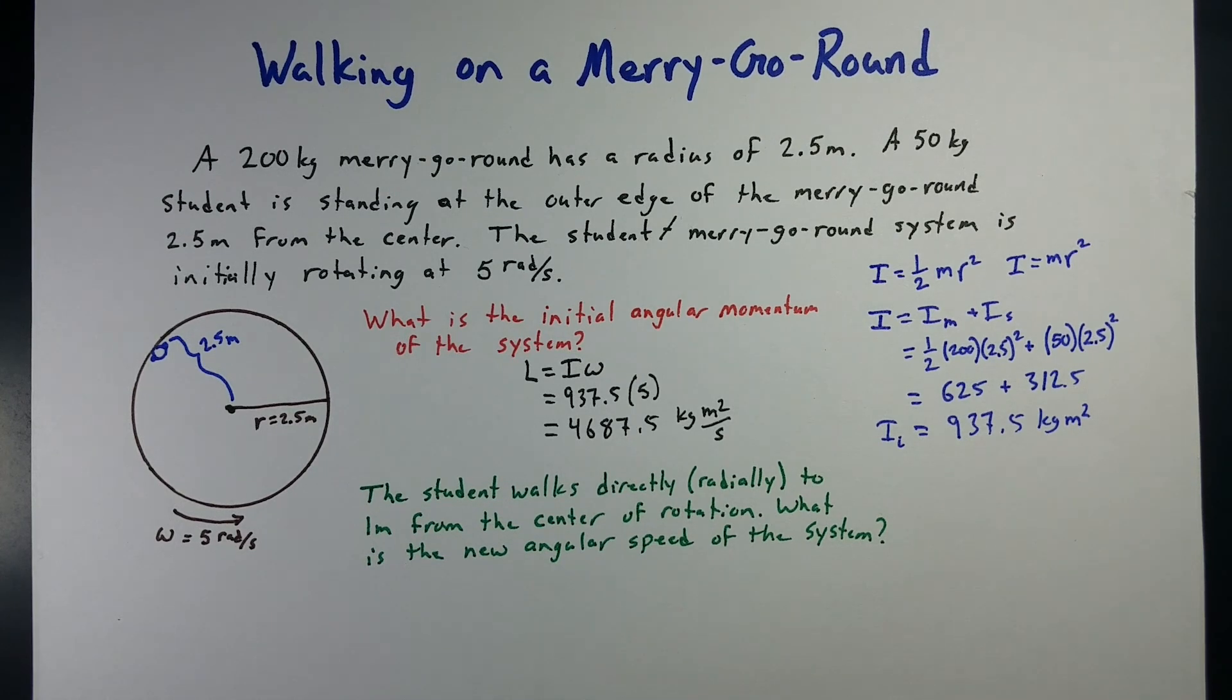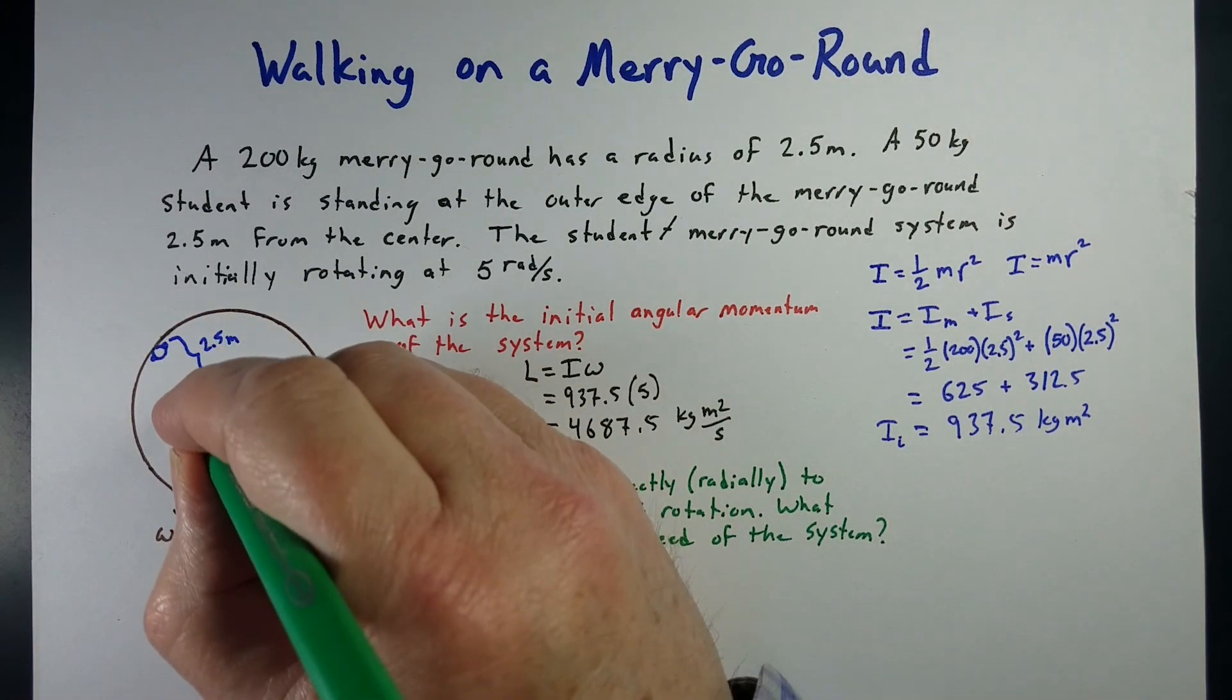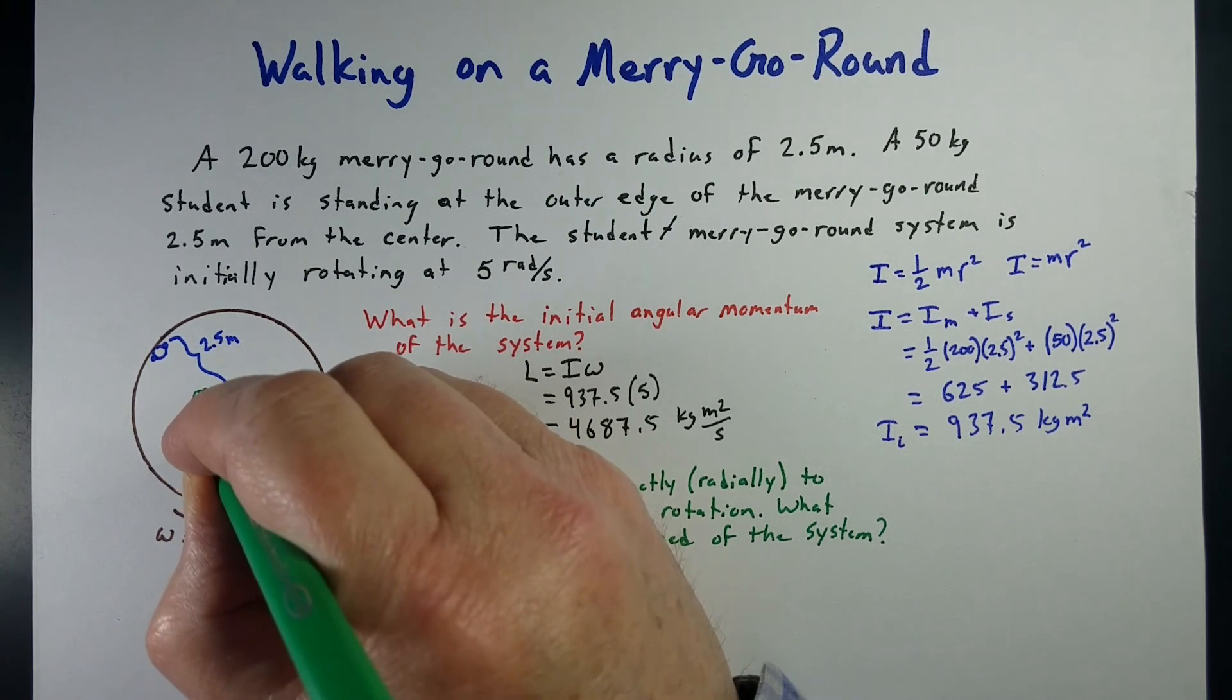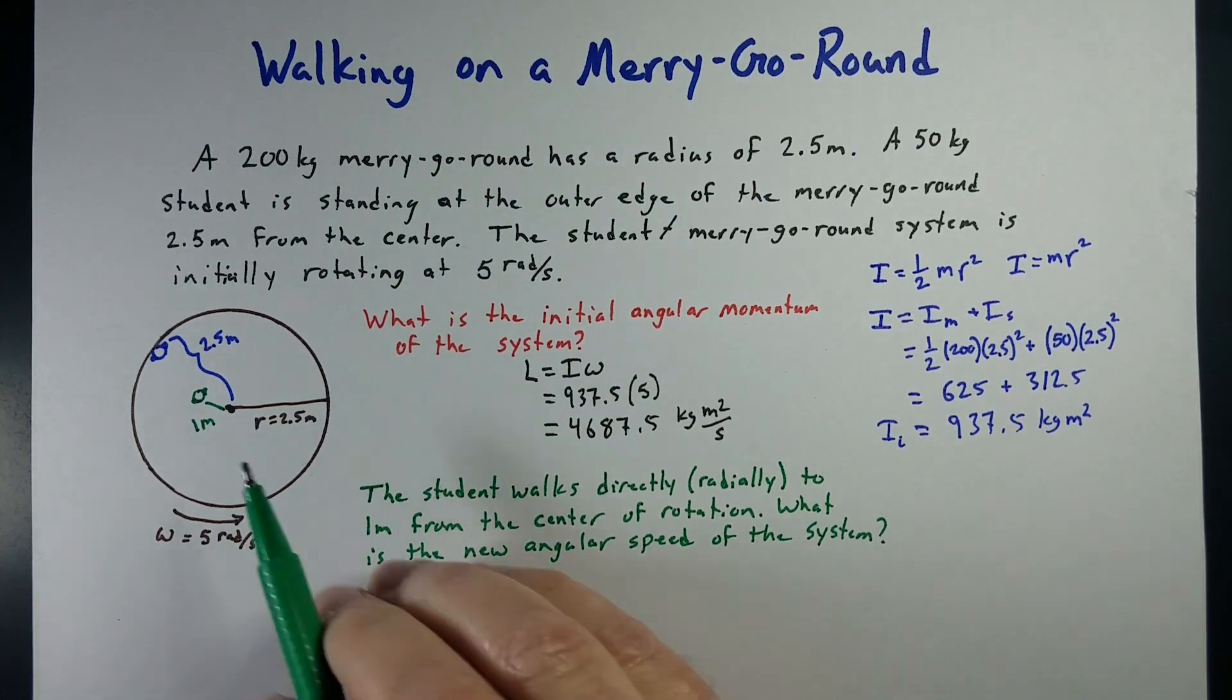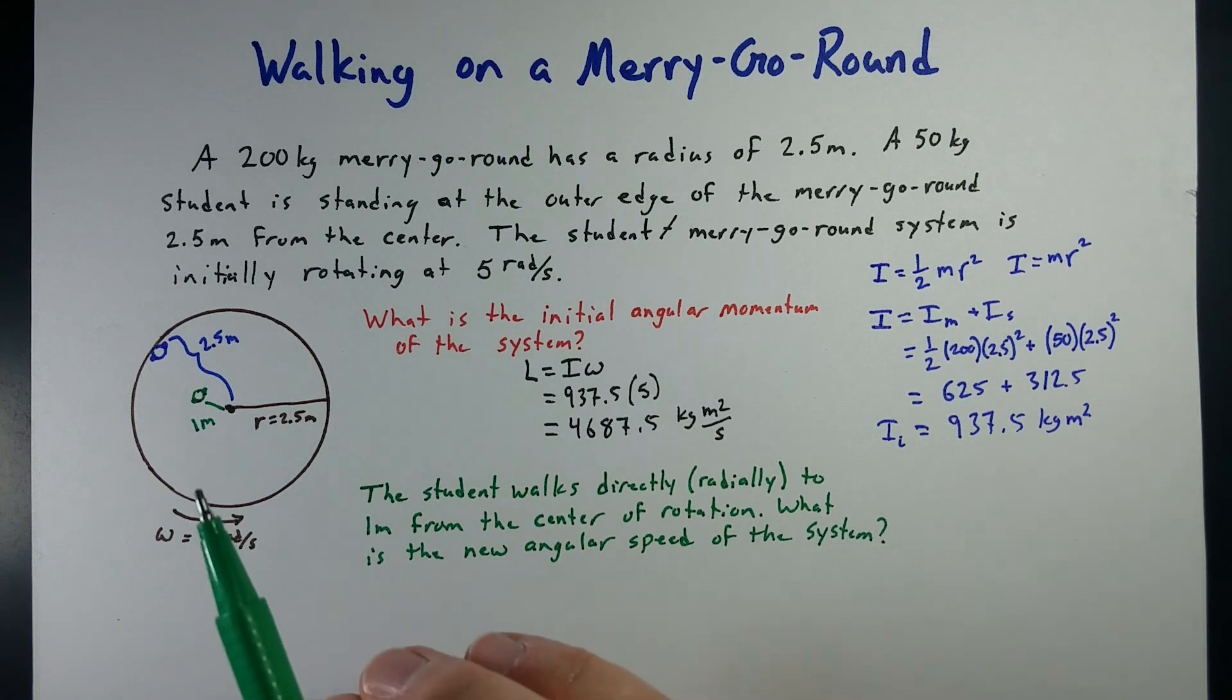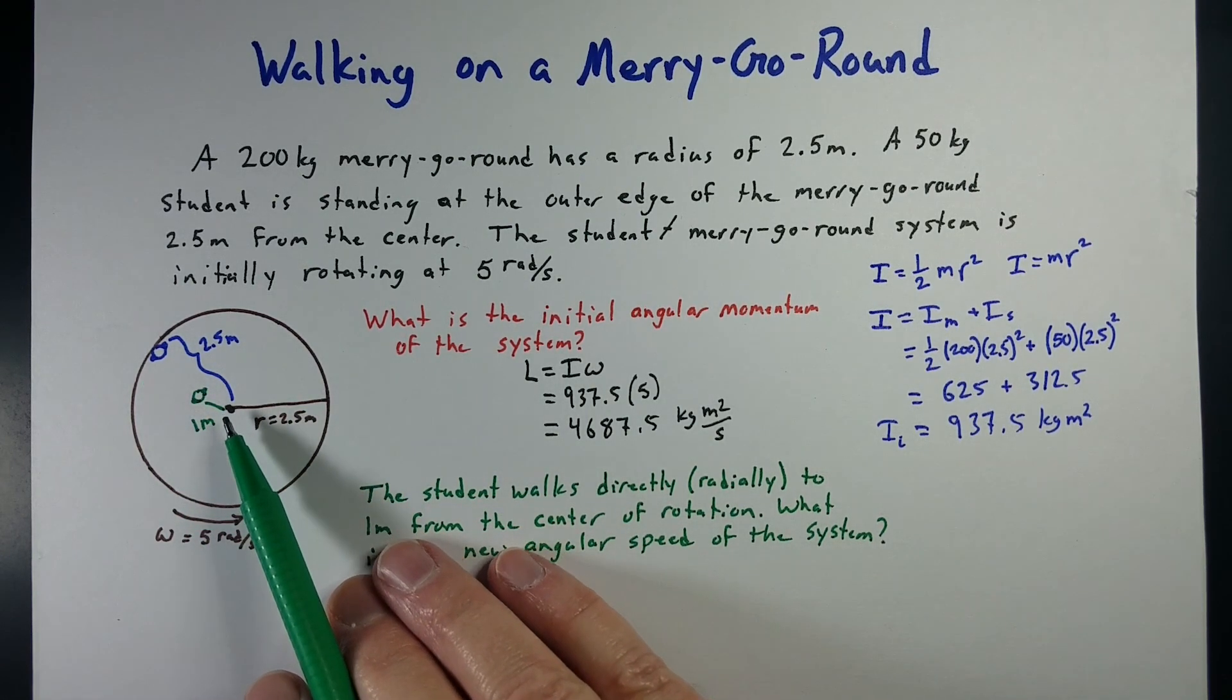Now, let's say that student decides to start walking in towards the center, and they go from 2.5 meters out to about 1 meter out. And we want to figure out what happens to the angular speed of our system. Now, just thinking about it, we're moving mass in towards the rotation. If we just think about it, we're moving mass from the outer edge in towards the center near where the point of rotation is.